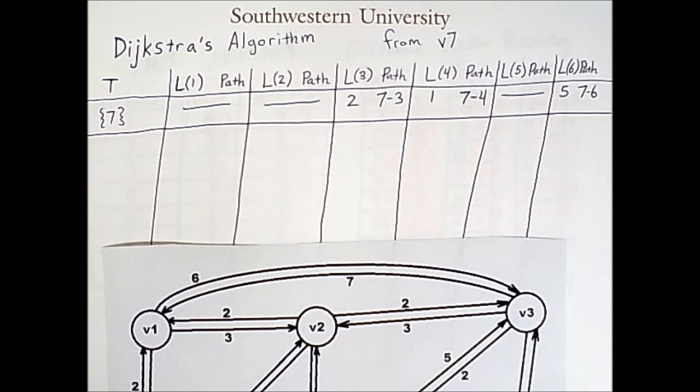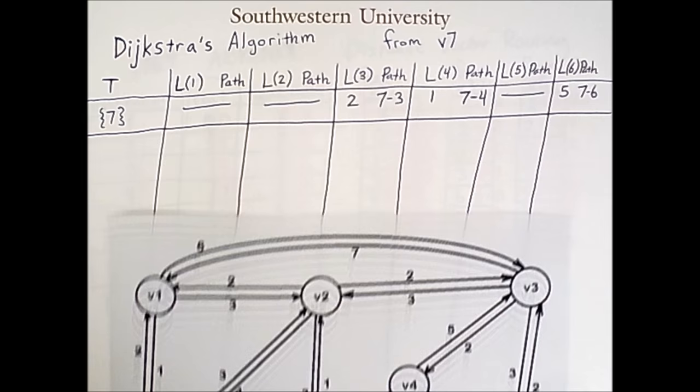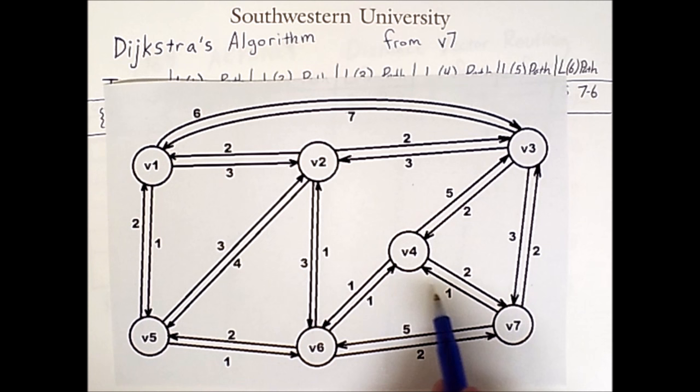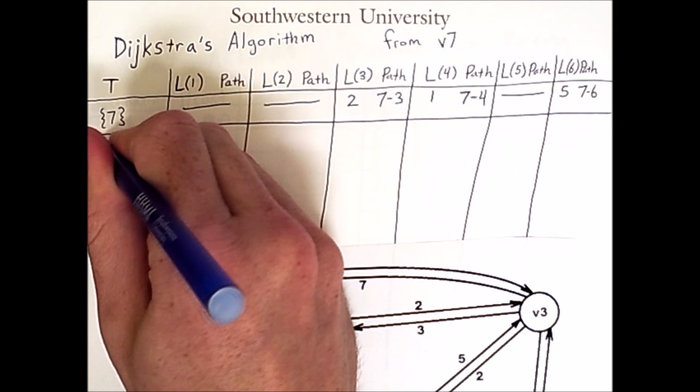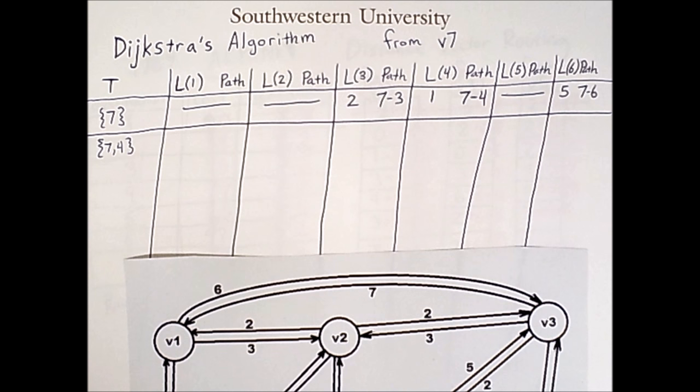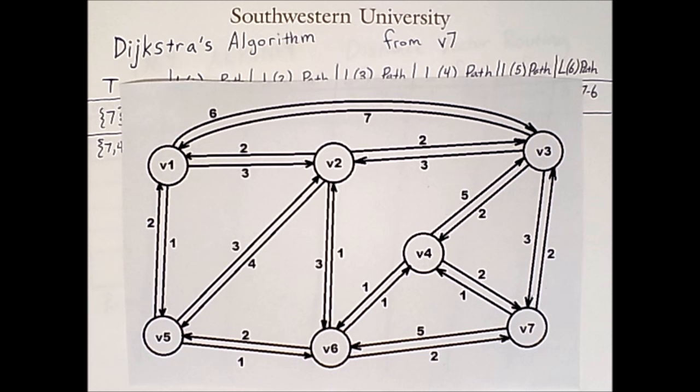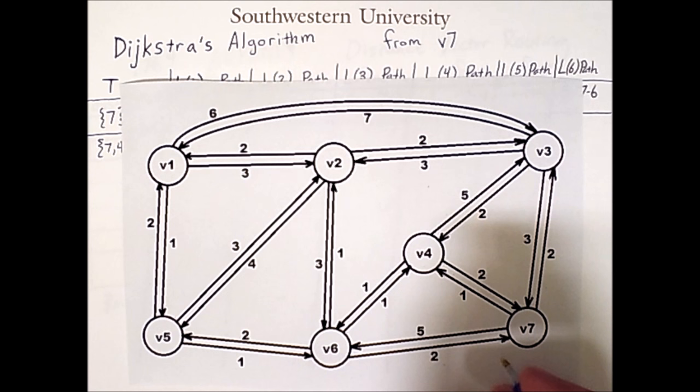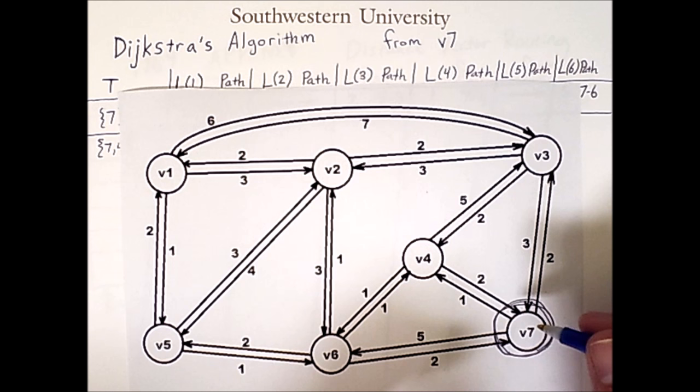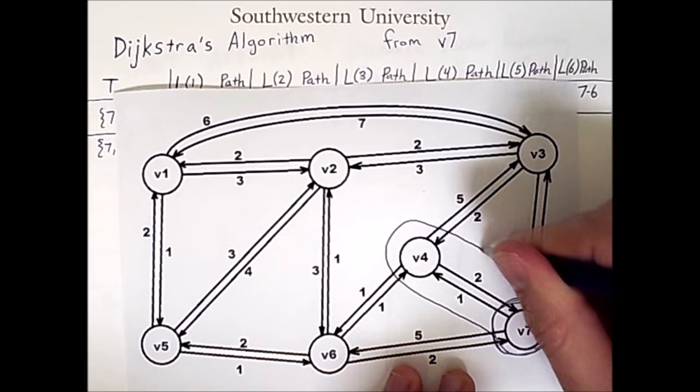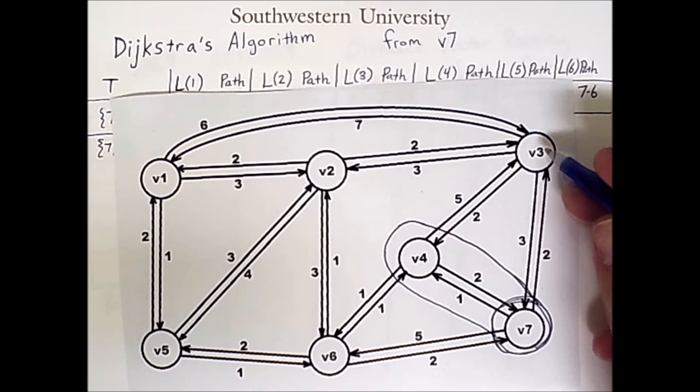Now, to continue, we have to add another vertex to the set T. The one we add is whichever one is closest in terms of these costs. So between 5, 1, and 2, the closest is 4. So we will add vertex 4 to our set T. And then we will figure out which nodes are one hop away from either 7 or 4. Any path that we add will either come off of 7 directly, or will come off of 4 via this connection from 7.